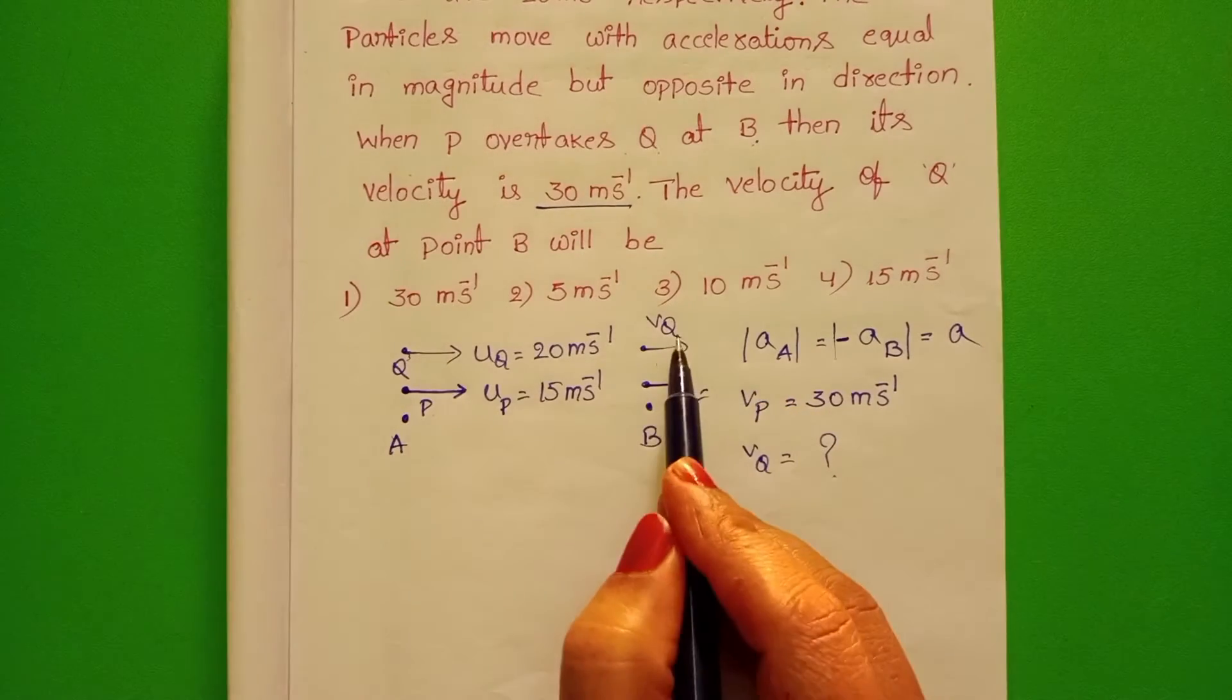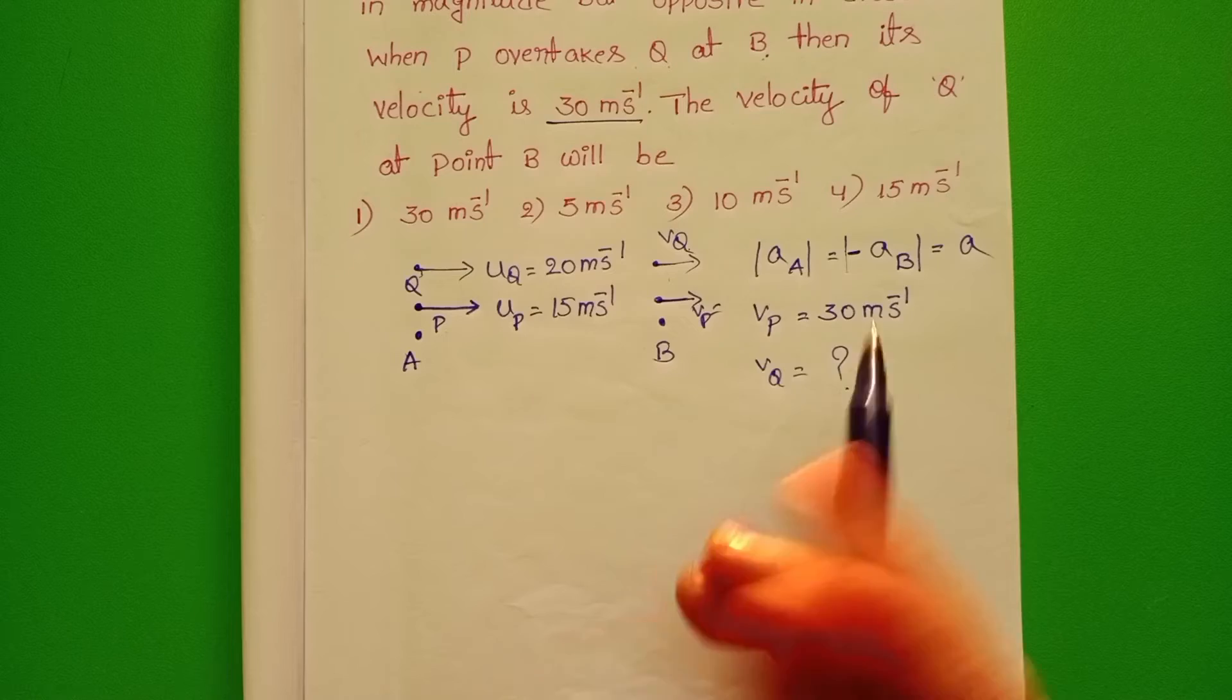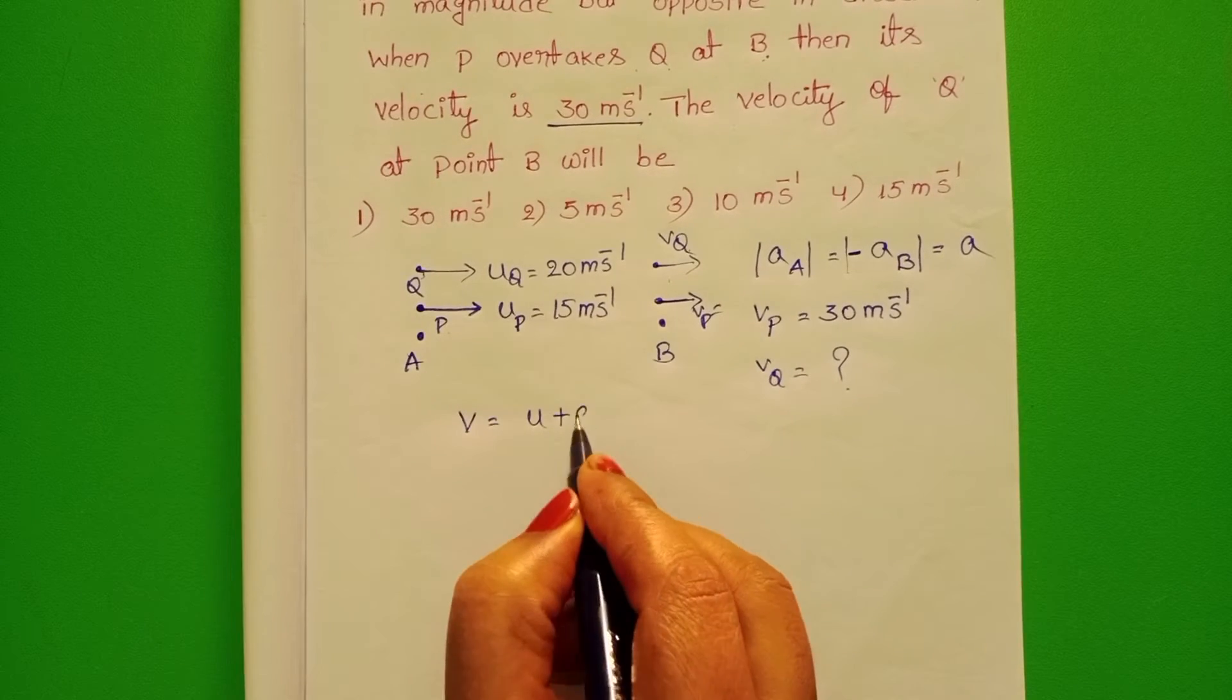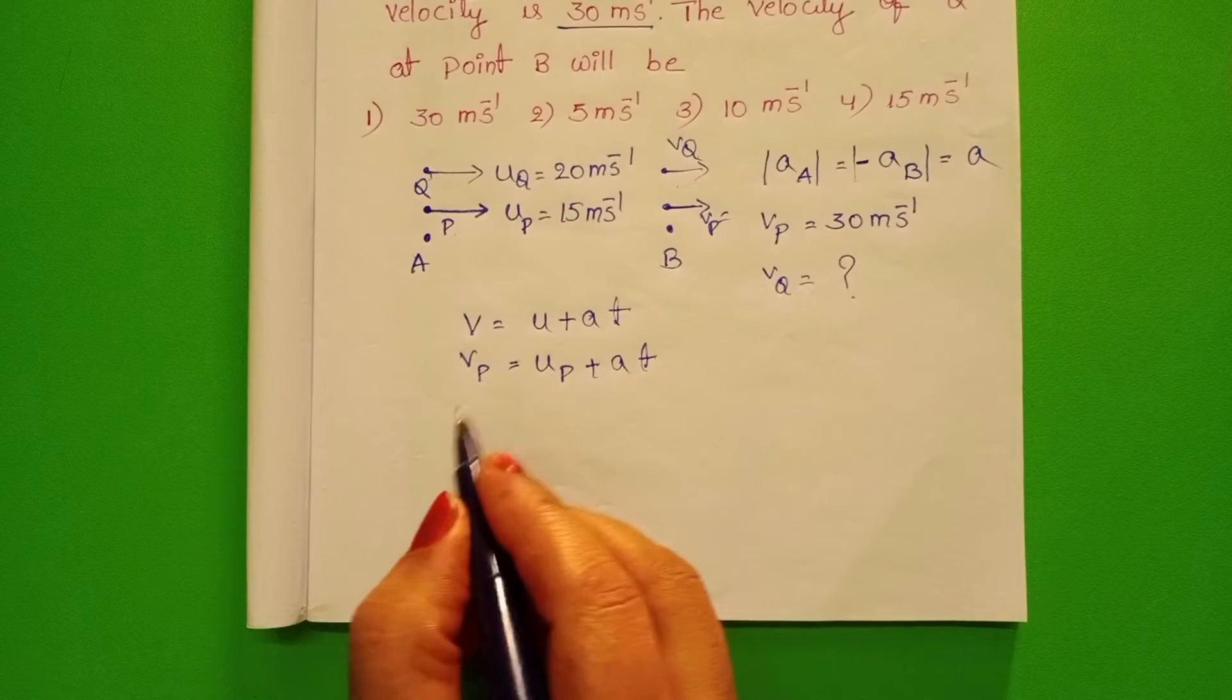velocity of particle P is 30 m per second and velocity of Q, we have to find out. Take equation of motion, V equals to U plus A T.